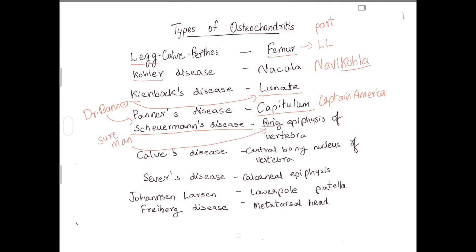Kyle's disease has a C and a V, and those letters appear in 'central bony nucleus of vertebra.' Next is Sever's disease. Severus Snape appeared to be a very cold and calculated person — Sever's disease is related to the calcaneal epiphysis.